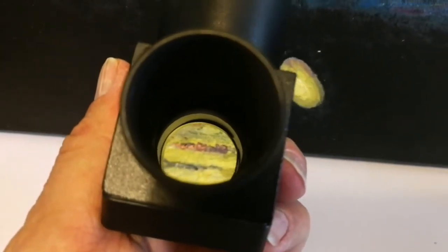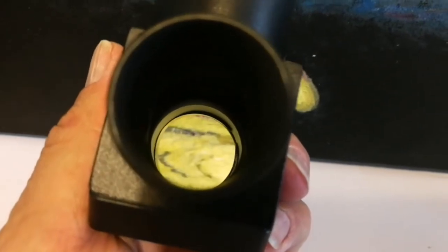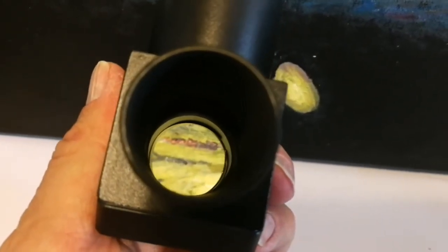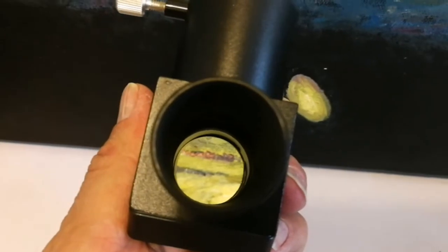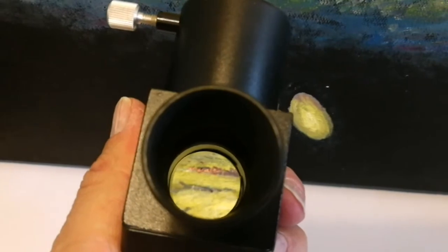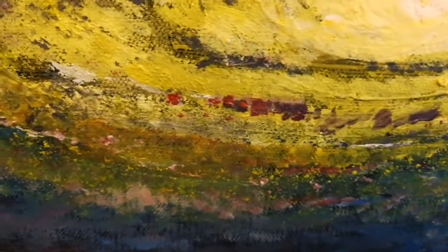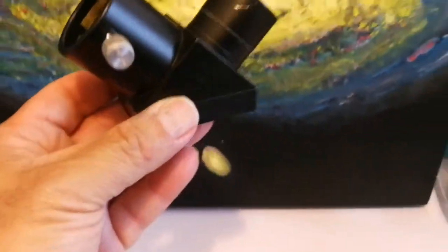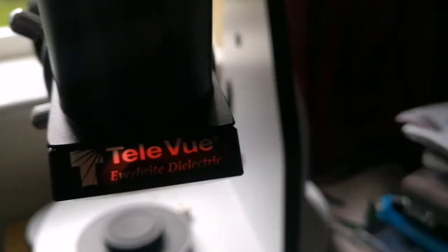You can see the metallicity of it. So quite nice. Although this camera is not focused, but there you can see it almost focused. Nice diagonal, I will test it later. This is a Teleview Everbright, one and a quarter inch.